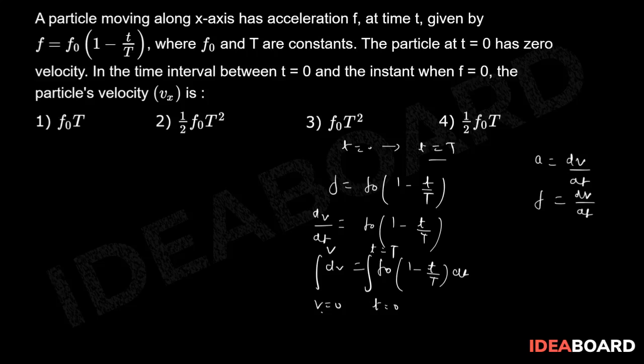The integral from 0 to v equals f₀ is constant, and the integration of 1 will be t minus integration of t will be t squared by 2, with limits 0 to capital T.